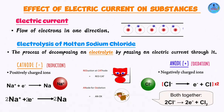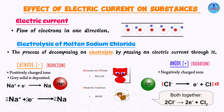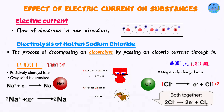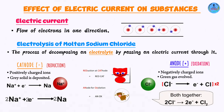What are the observations you are going to see in this setup? At the cathode, you are going to observe a gray solid being deposited — and this, of course, is sodium. At the anode, you are going to observe a green gas — and this is chlorine.